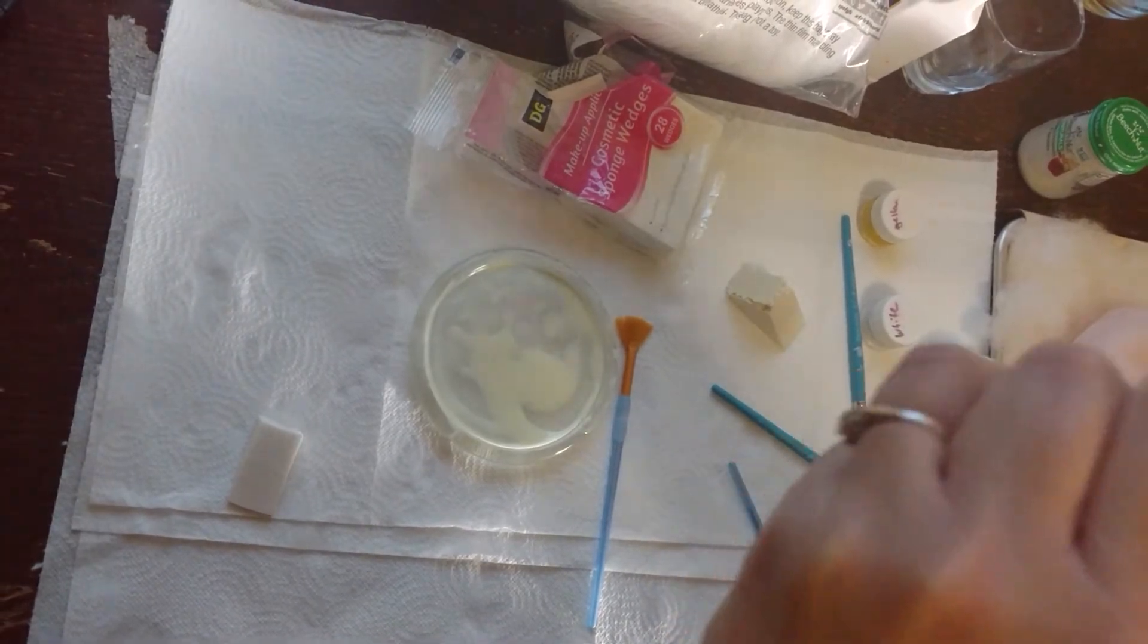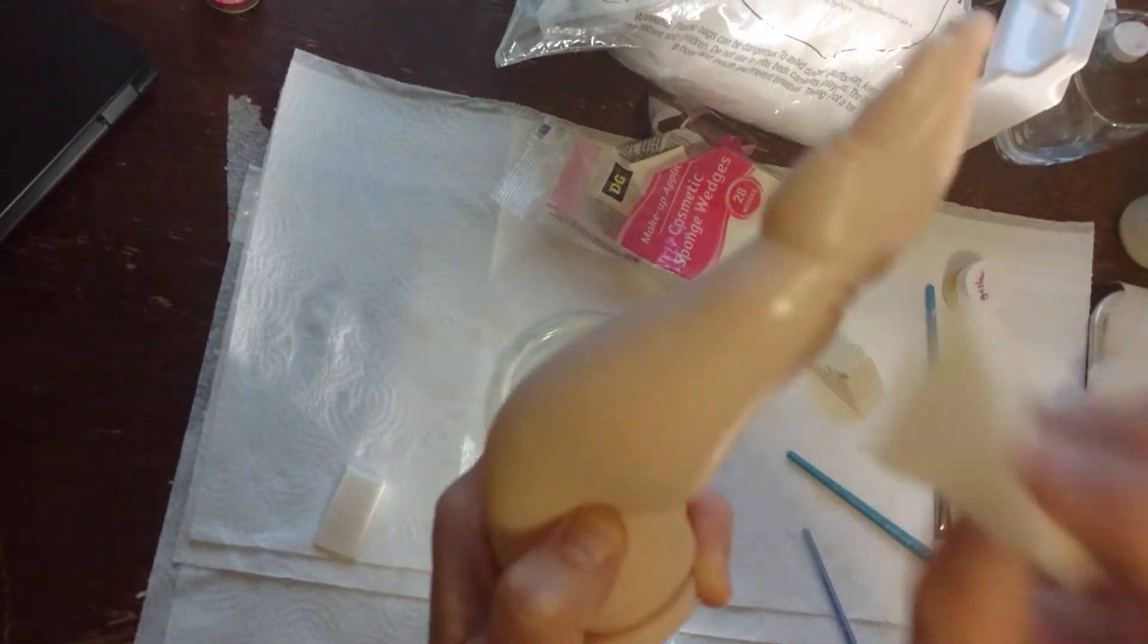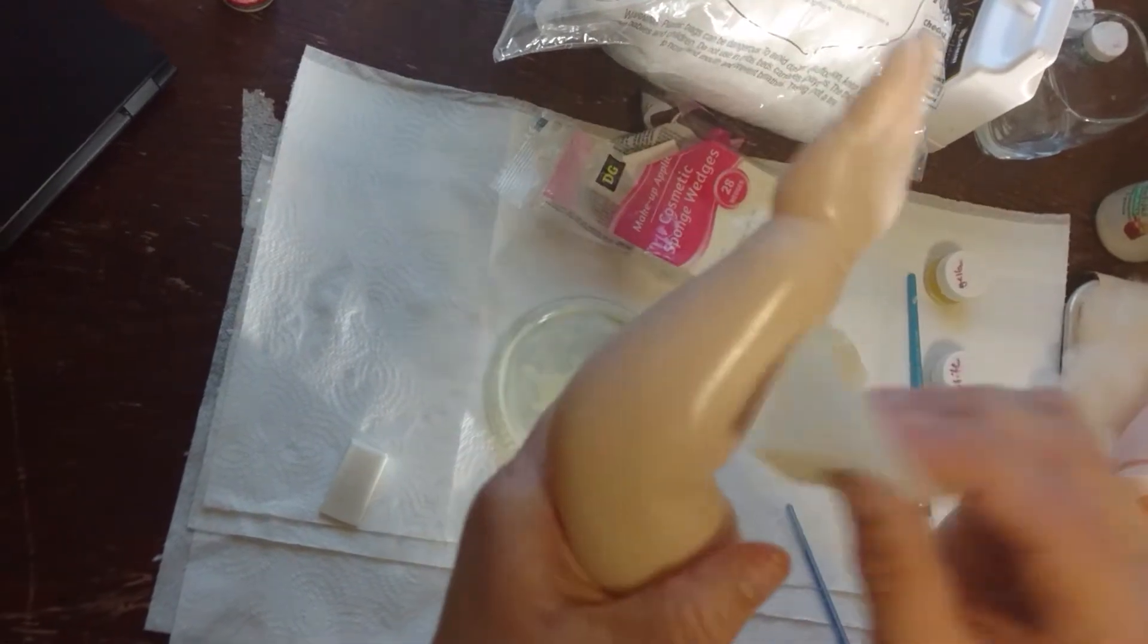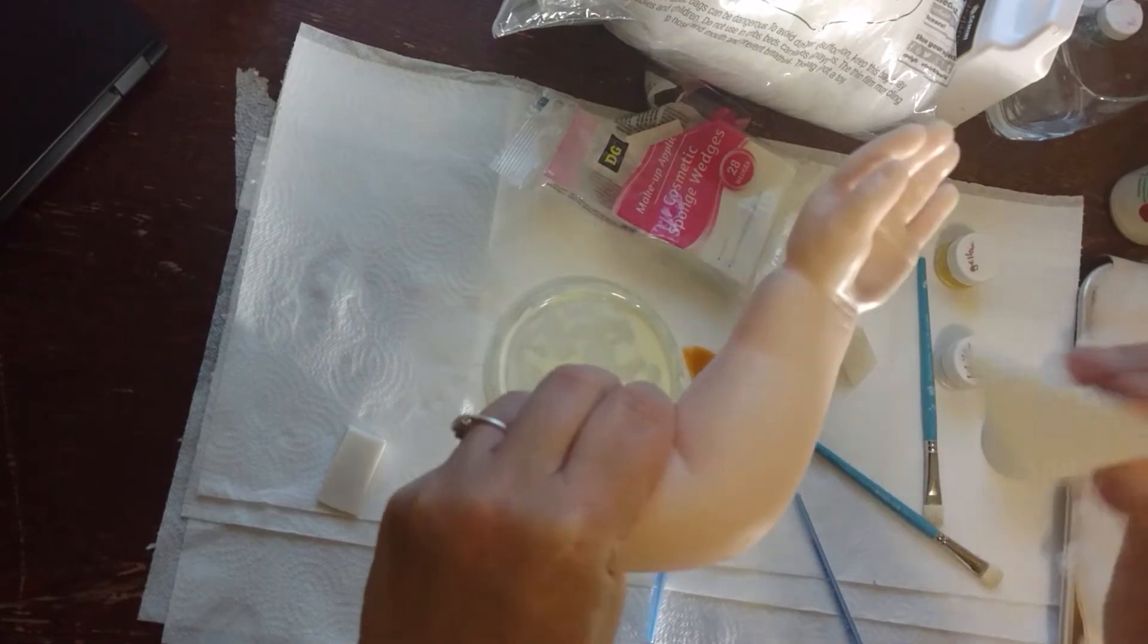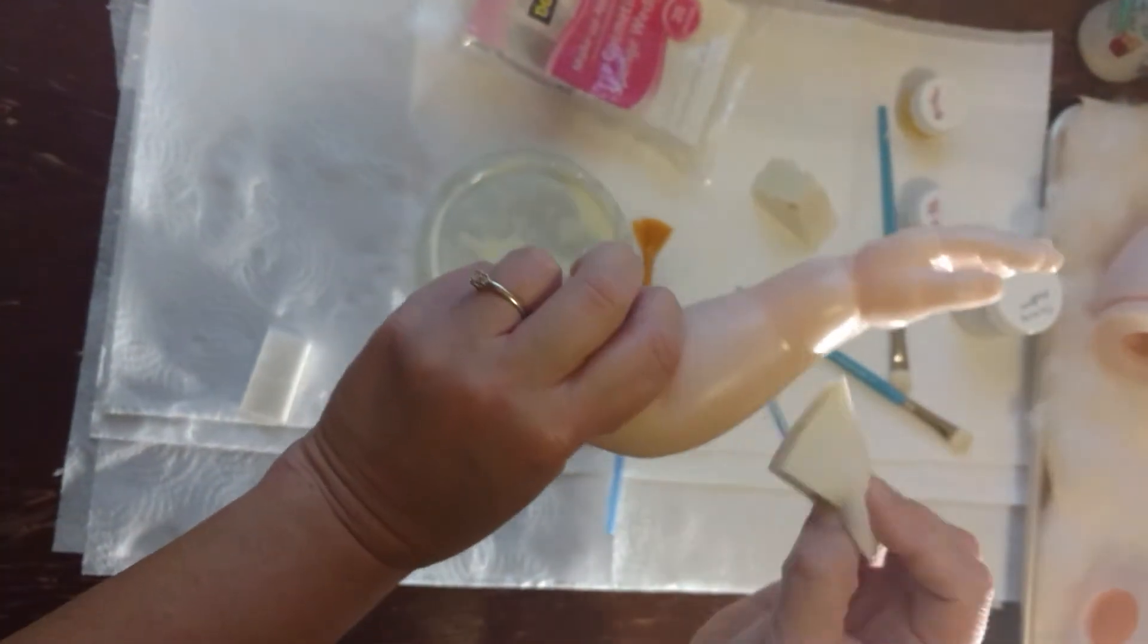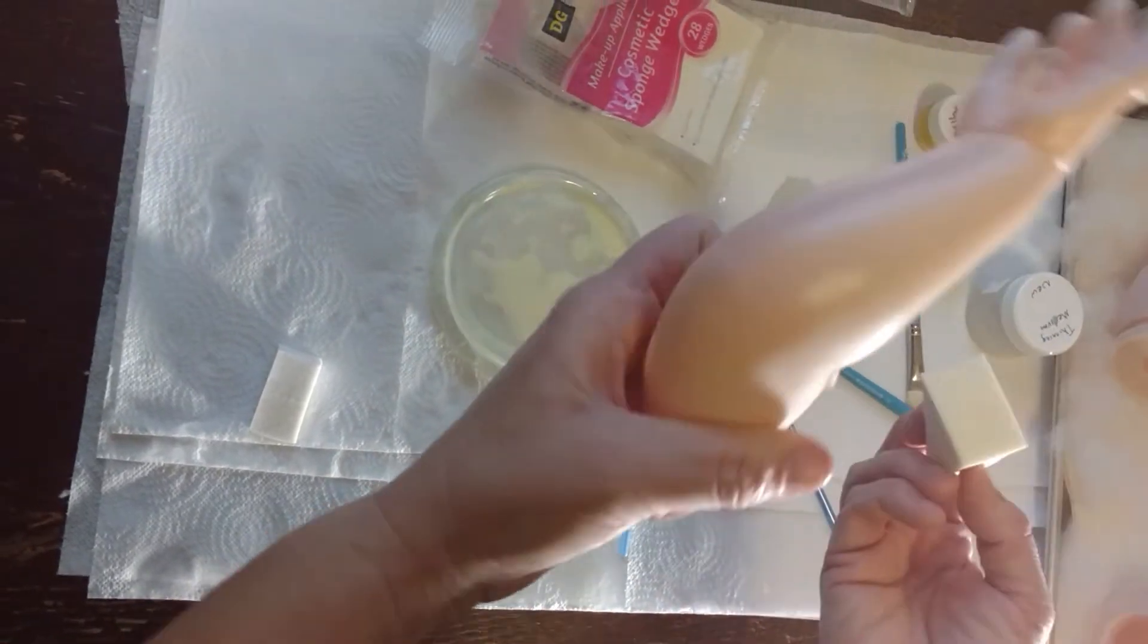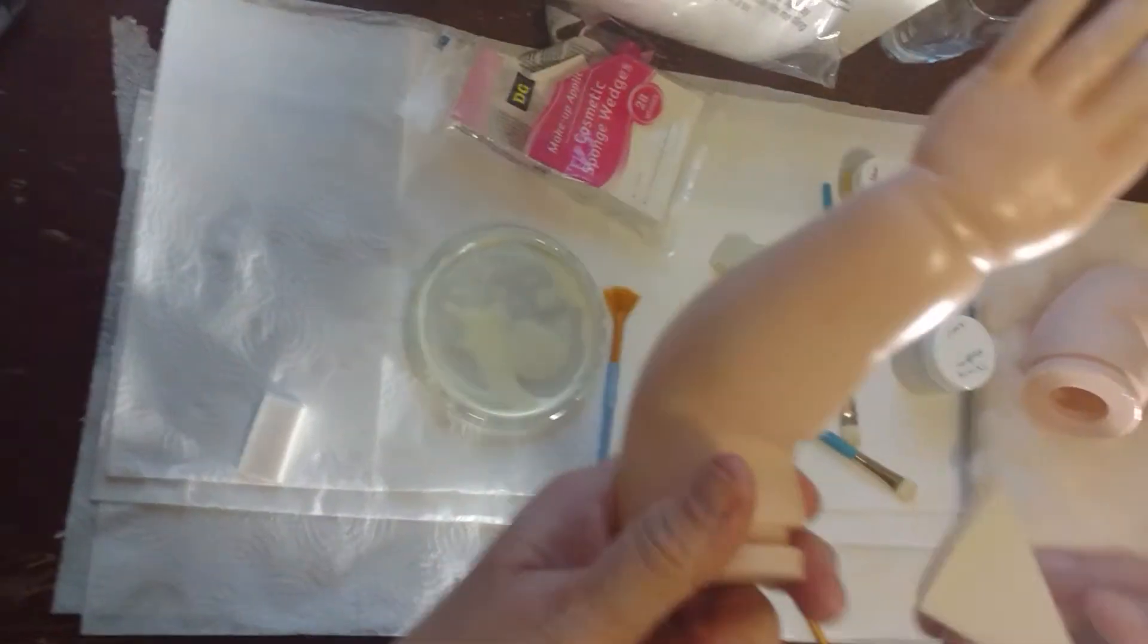So then you just pounce the thinning medium like you would if you were sealing your baby at any other time. This will be the next step that we're going to do. And you just want to make sure it's very even. I have a light here that I look in. I just look for the moisture and I make sure it's very, very even.